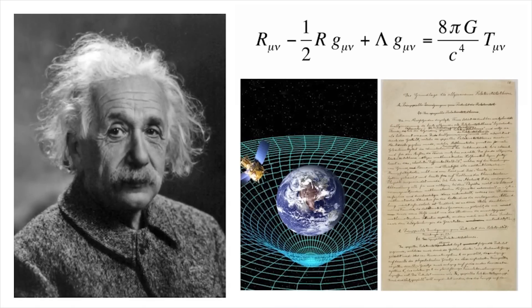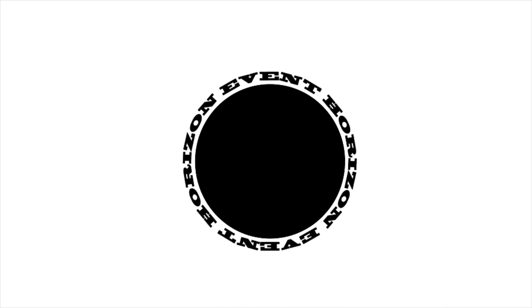Einstein's theory of general relativity predicts the existence of black holes that trap all light and matter inside a surface known as the event horizon.